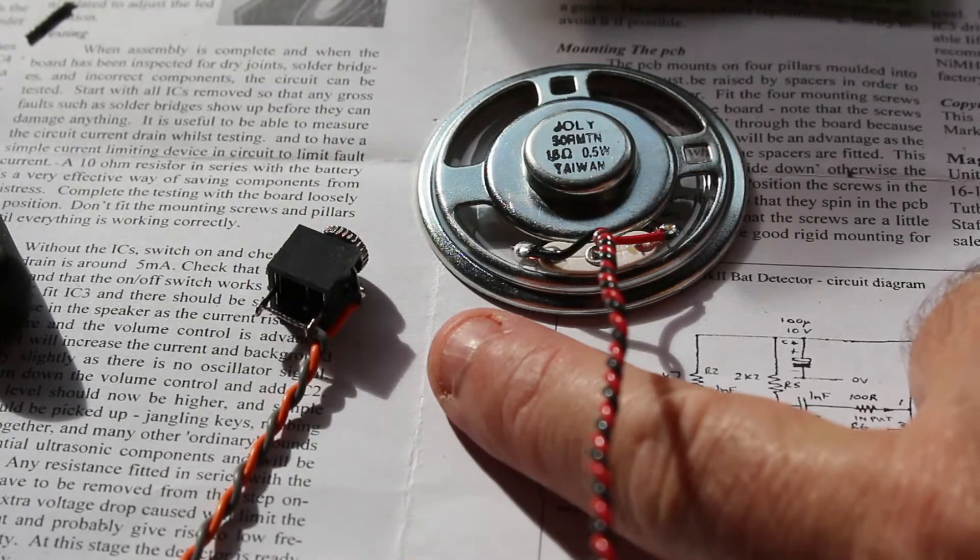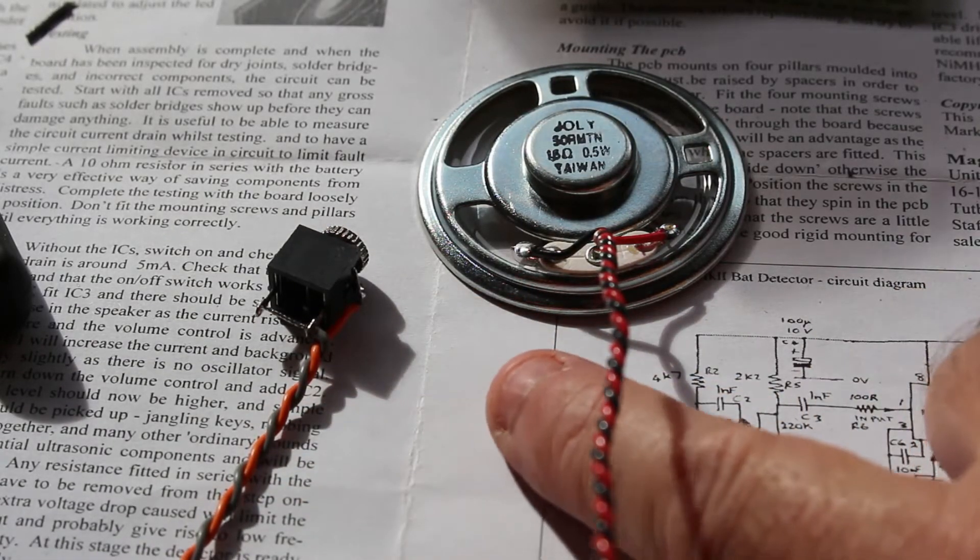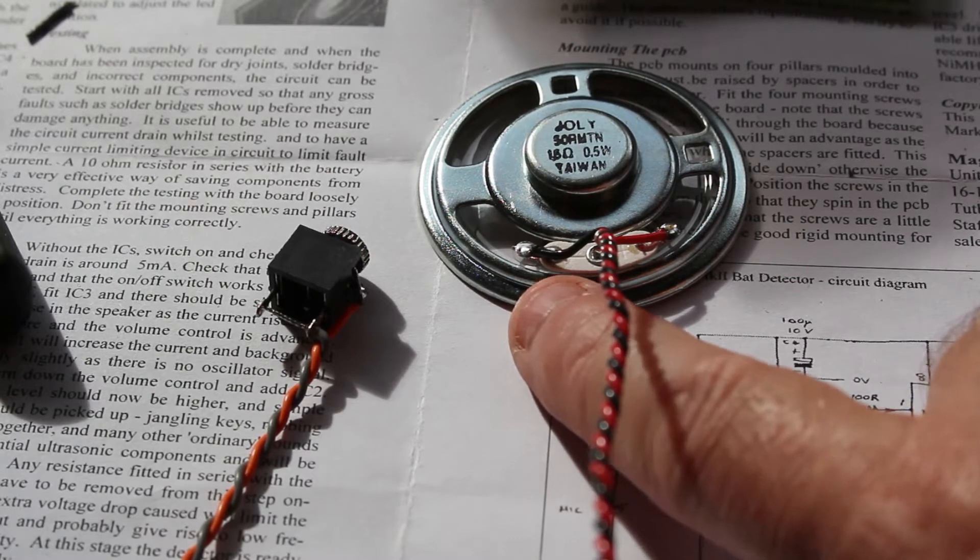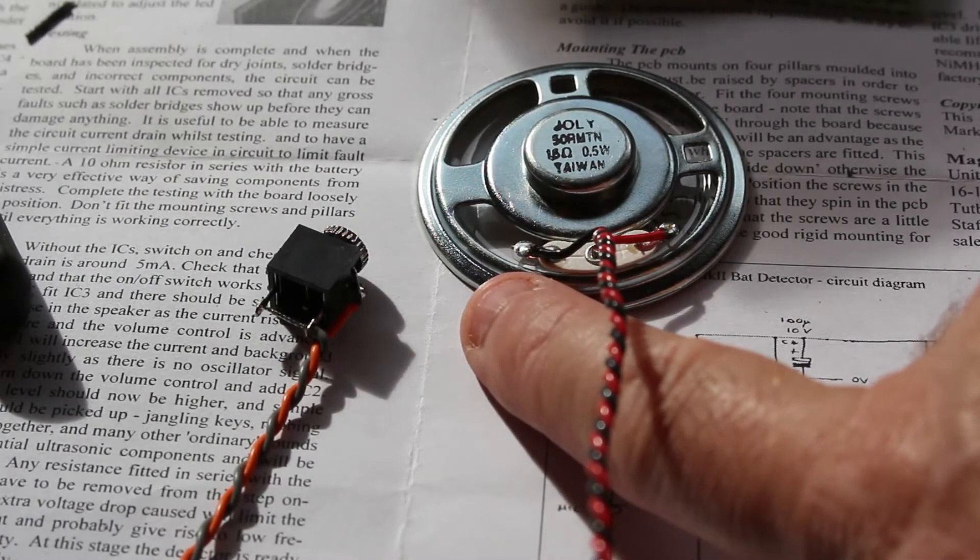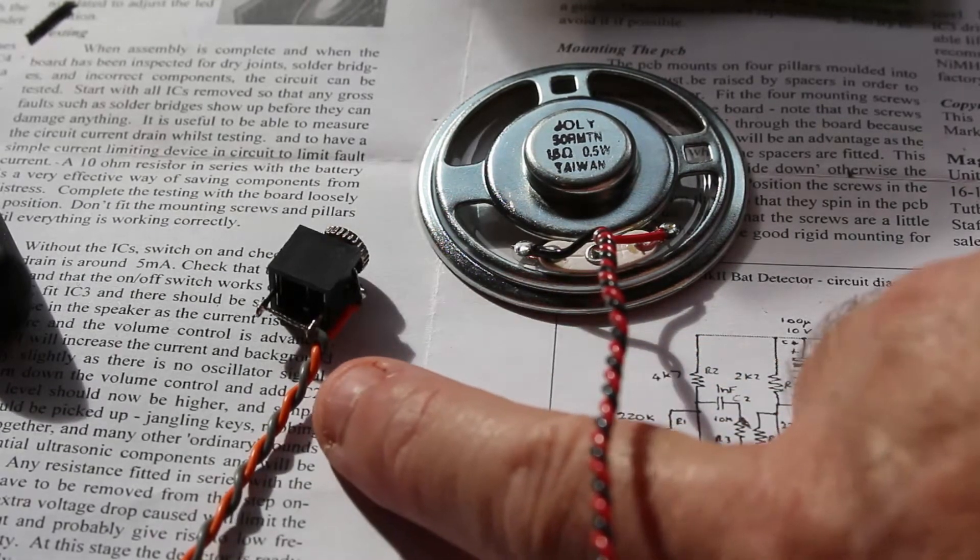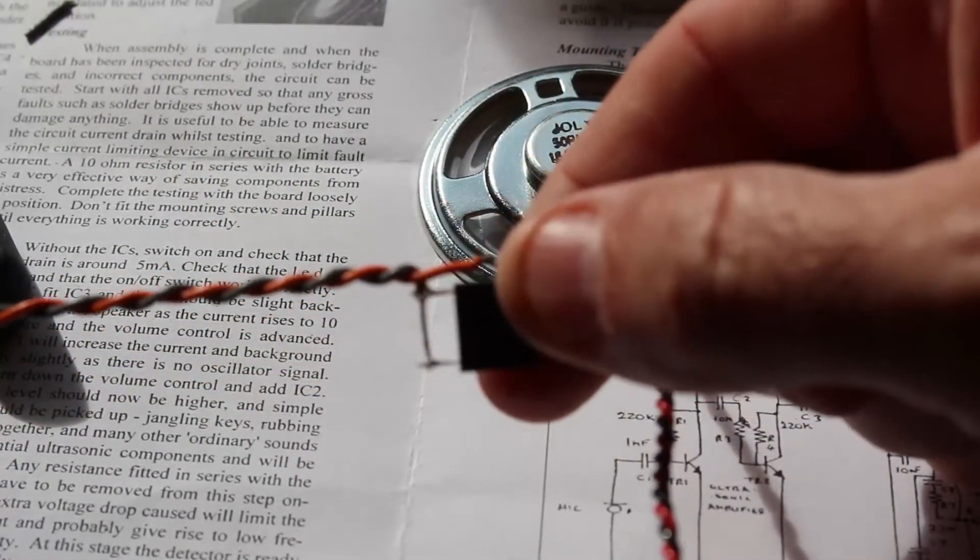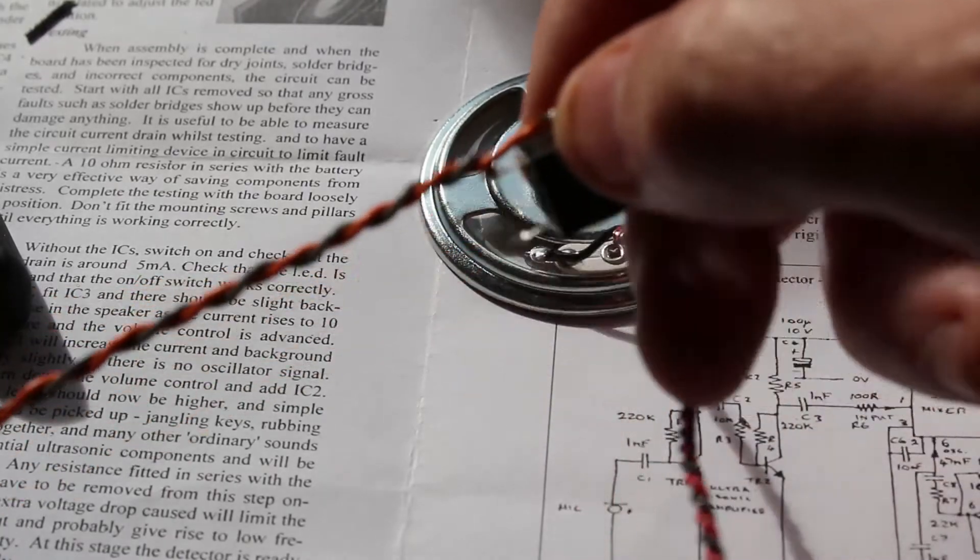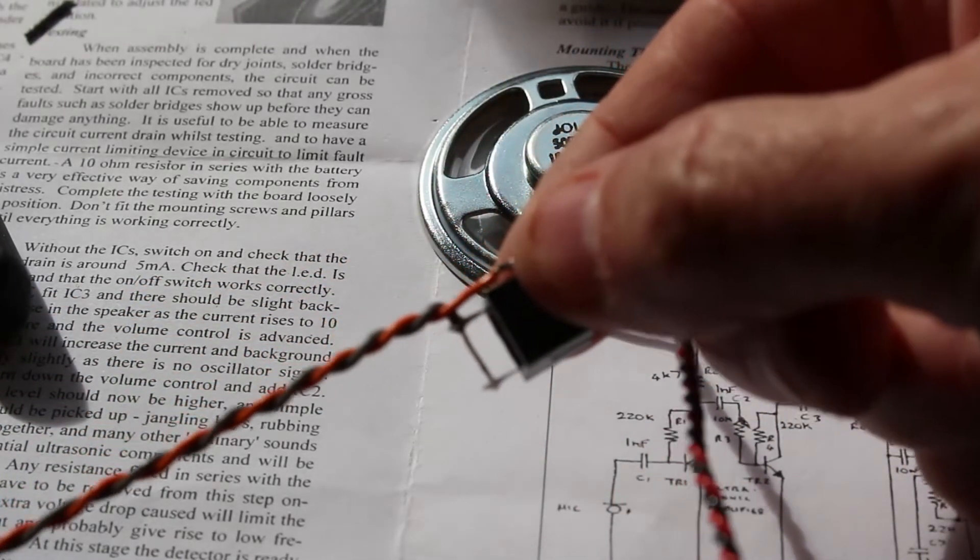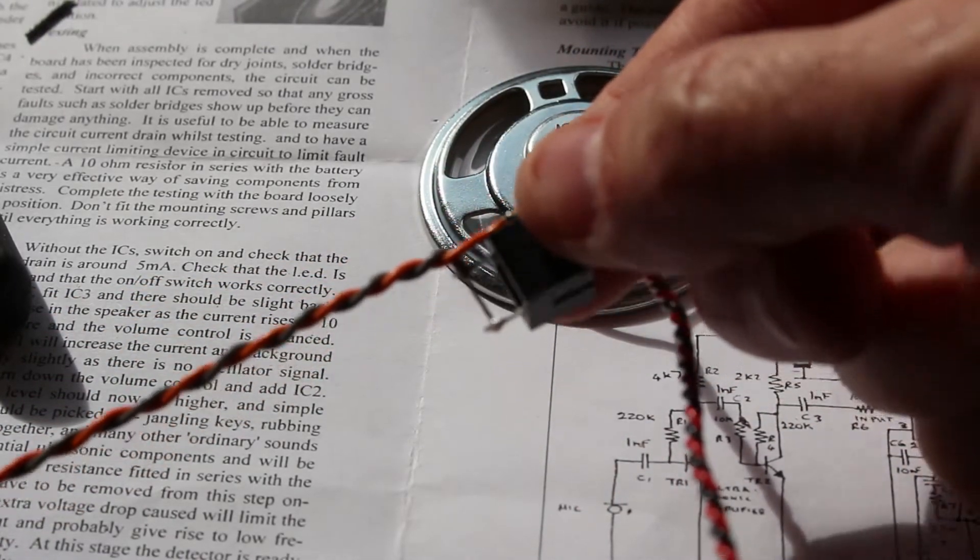Here you can see we've twisted a couple of pairs of wires together and I've mounted one pair onto the speaker. Black's on this side and then onto the jack here, the headphone jack. It says put one onto the end terminal nearest the thread and join the other two together.